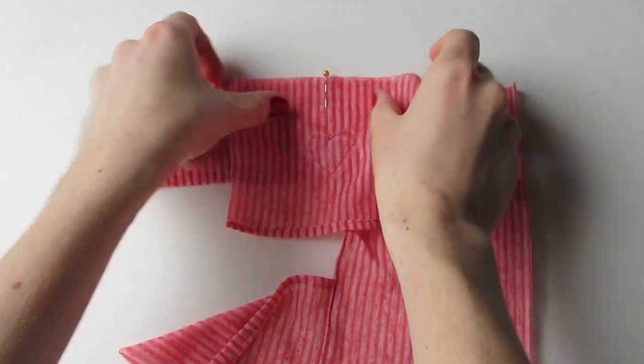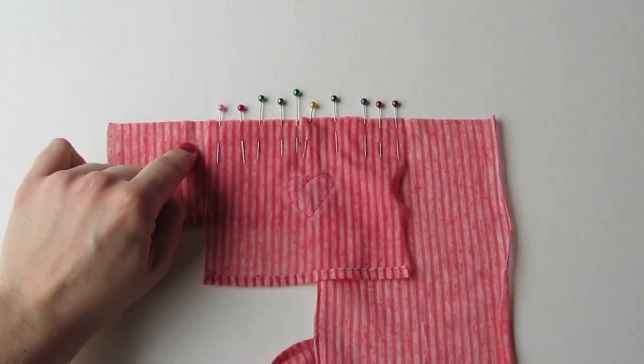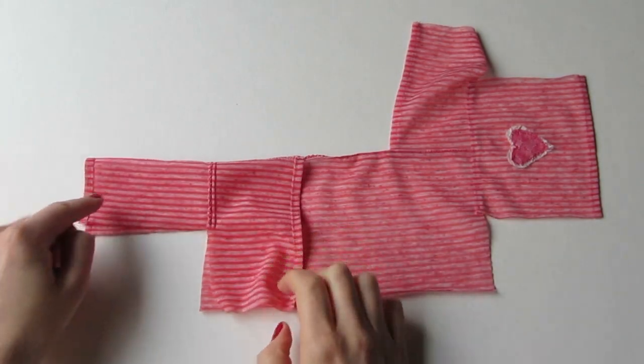Pin and then zigzag the seam. Fold the sweater in half, and then pin and sew the sleeve seam and the side seam.